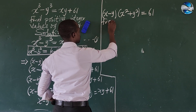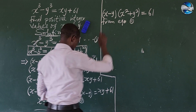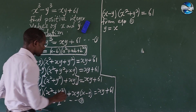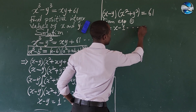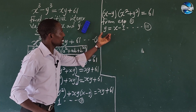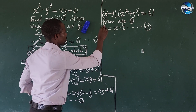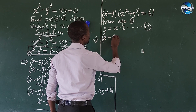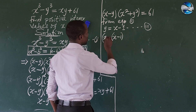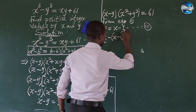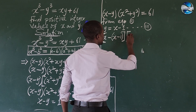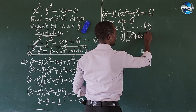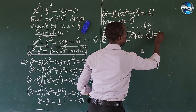From equation 2, we have y equals x minus 1. Let's call this equation 3. We substitute equation 3 into our expression. This gives us: (x minus (x minus 1)) times [x² plus (x minus 1)²] equals 61.